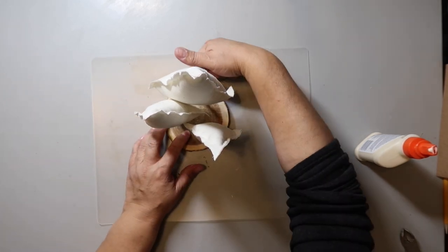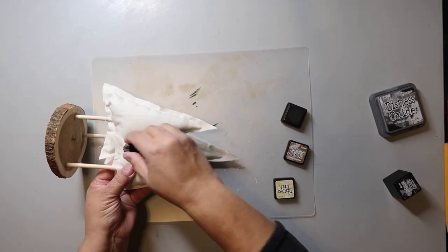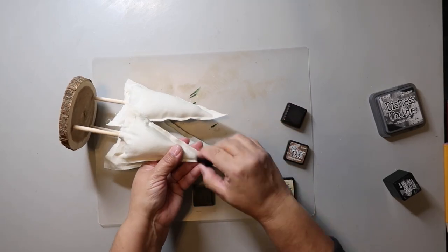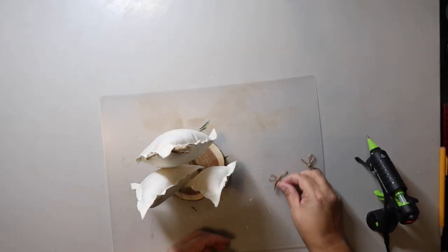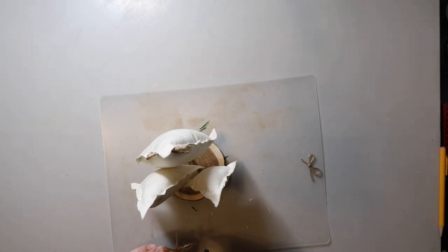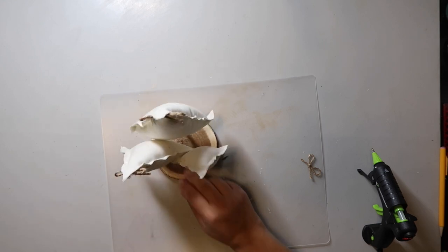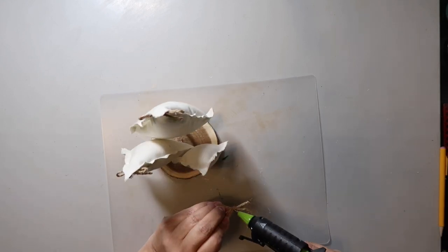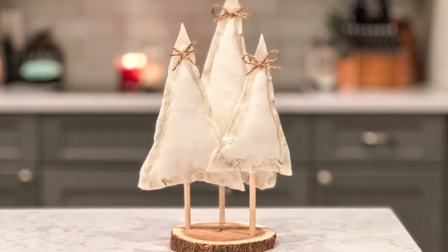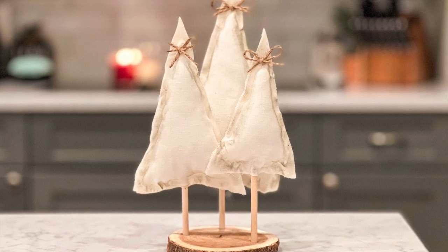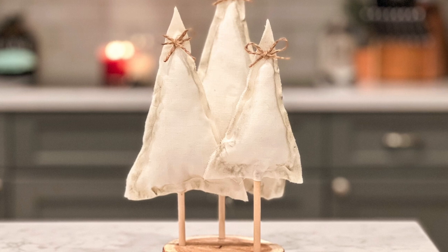I added some distressing ink to kind of age this, but really it just made it look dirty. But anyway, I probably should have distressed it before I stuffed it. And I made some simple jute twine bows and I hot glued them to the top of each of the trees. Then I really like how this turned out. I would distressed it differently if I did it again, but still, it's simple, it's rustic, and I love it. And I think it's going to look good on my tiered tray.